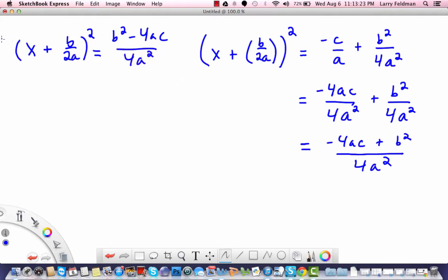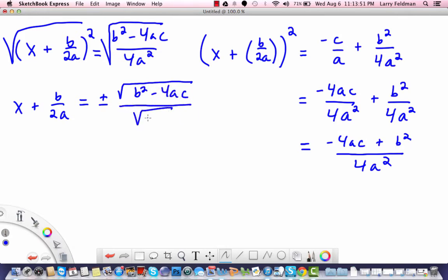And at this stage we take the square root of both sides. On the left we have x plus b over 2a, and on the right we have plus or minus the square root of b squared minus 4ac all over the square root of 4a squared. And please remember that we need this plus or minus because when you take the square root of both sides of an equation, there can be a positive and negative solution.